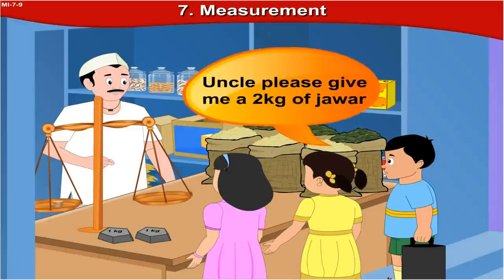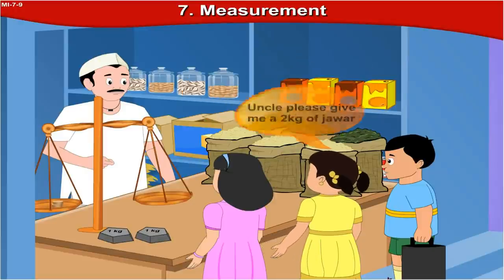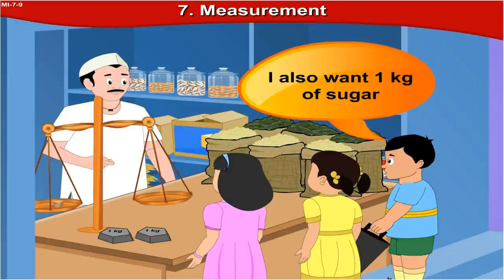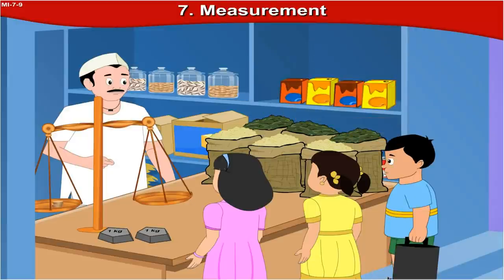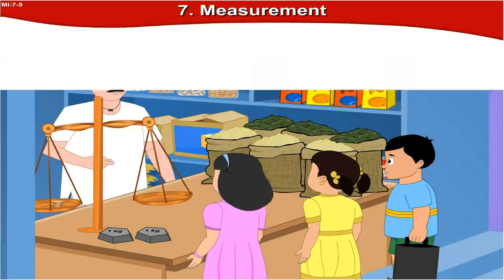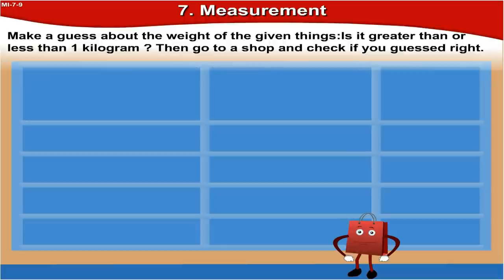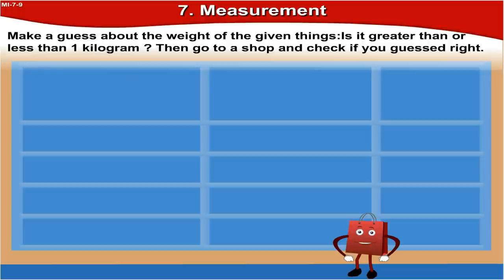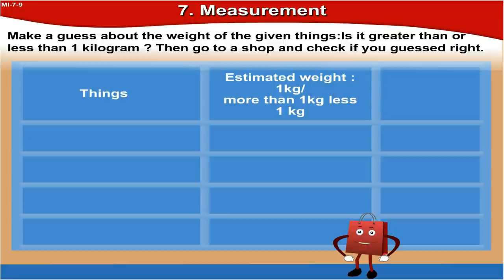Please give me 2 kilograms of jar. I also want 1 kilogram of sugar. I want 5 kilograms of wheat. Now make a guess about the weight of the given things — is it greater than or less than 1 kilogram? Then go to a shop and check if you guessed right. We need to estimate the weight — whether it is 1 kg, more than 1 kg, or less than 1 kg — and then check the actual weight.